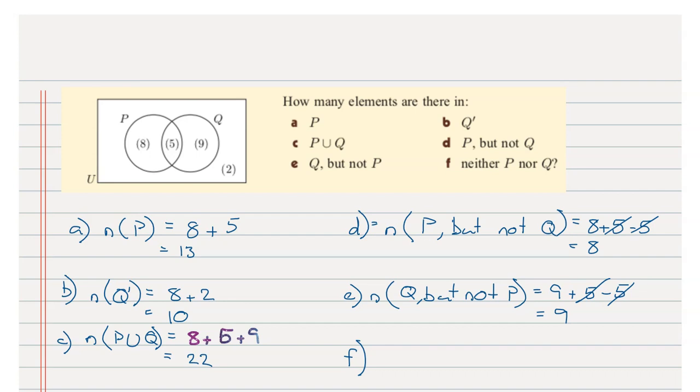And finally we have f. It says neither P nor Q. So neither P nor Q, well what lies outside P and Q? What lies outside of this area? Well it's just two. So the answer here is two.